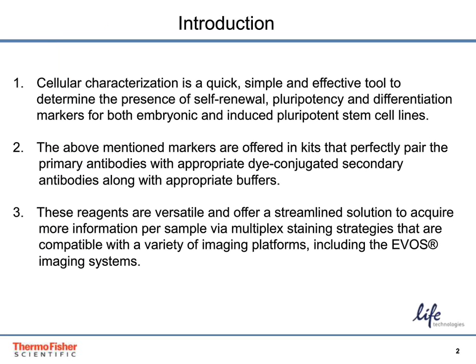Cellular characterization is a quick, simple, and effective tool to determine the presence of self-renewal pluripotency and differentiation markers for both embryonic and induced pluripotent stem cell lines. The above-mentioned markers are offered in kits that perfectly pair the primary antibodies with matched dye-conjugated secondary antibodies along with appropriate buffers. These reagents are versatile and offer a streamlined solution to acquire more information per sample via multiplex staining strategies.